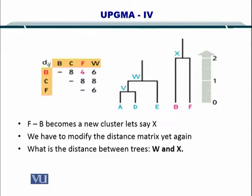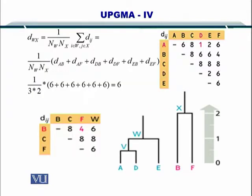To connect these two trees, we have to connect X and W. But before we do that, we have to calculate the distance between W and X. Now to create the distance matrix and compute the distance between W and X, you remember the formula that the number of sequences in W multiplied by the number of sequences in X.